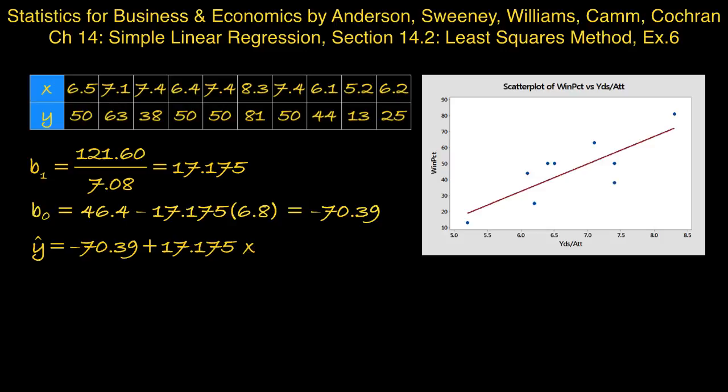In this equation, -70.39 represents the y-intercept, which is the expected value of Y when X equals zero. That doesn't have any practical interpretation in this case because it doesn't make sense for a team to have zero yards per attempt. That would be a very poor team indeed.